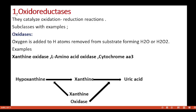First, oxidoreductases. These enzymes catalyze oxidation-reduction reactions. Subclass: oxidases — oxygen is added to or hydrogen atoms are removed from substrate, forming H₂O or H₂O₂. Examples are xanthine oxidase, L-amino acid oxidase, and cytochrome AA3. For example, xanthine oxidase converts hypoxanthine to xanthine, and then xanthine to uric acid.